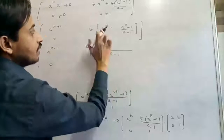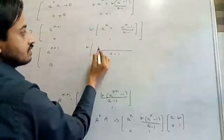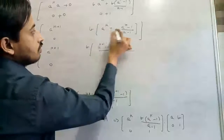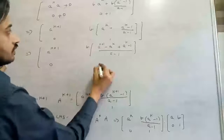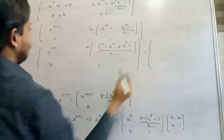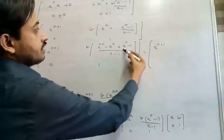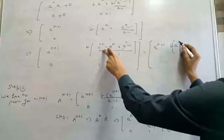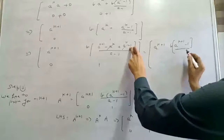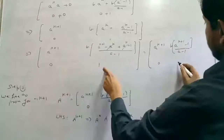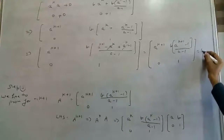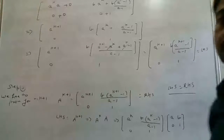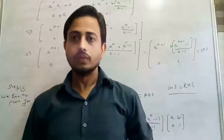Taking LCM as A minus 1: multiply A with A^k to get A^(k+1), then A^k multiplied by minus 1 gives negative A^k, plus A^(k-1) divided by A minus 1. This simplifies — terms cancel — and we get A^(k+1) minus 1 divided by A minus 1. So this equals 0 and 1. This is your left hand side equal to right hand side, hence proved. I hope this is clear; please make a note.